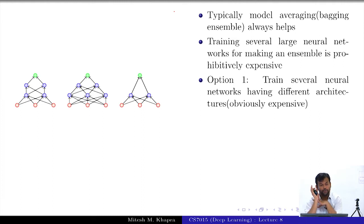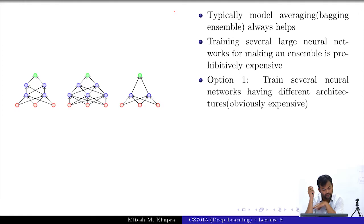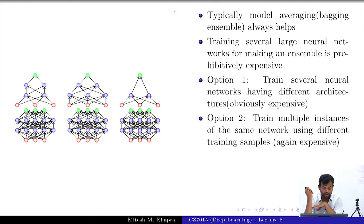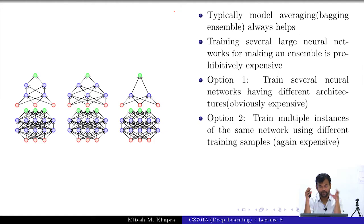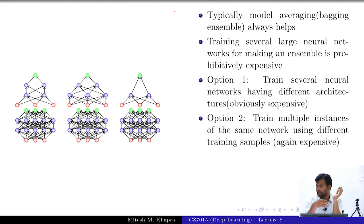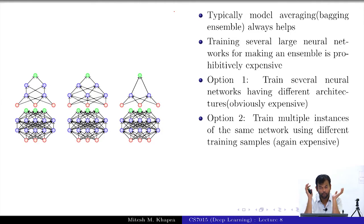One option is to train several different neural networks having different architectures, but this is going to be expensive because you have to train K of them. The other option is to train the same network on different subsets of the data — this is also going to be expensive. Both ensembling techniques — different architectures or same architecture on different data subsets — are going to be expensive.